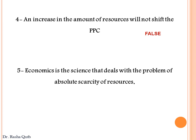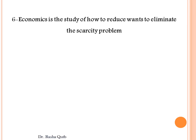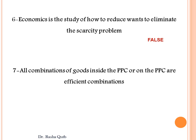Number five: economics is a science that deals with the problem of absolute scarcity of resources. Number six: economics is the study of how to reduce wants to eliminate the scarcity problem. Number seven: economics is the study of how to use the limited resources in order to satisfy the unlimited human wants. Number seven: all combinations of goods inside the production possibility curve or on the production possibility curve are efficient combinations. This sentence is false, because any point located below the production possibility curve is attainable but not efficient, since the resources are not fully employed — we have idle resources.